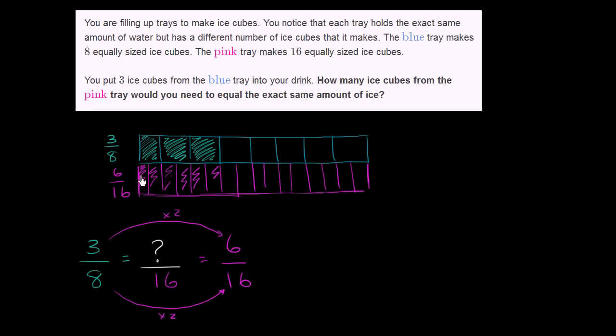Well, sure it does. Because for the pink ice tray, you have two ice cubes for every one that you have in the blue ice tray. So in the blue ice tray, you have eight equally sized cubes. Well, for each of those, you're going to have two in the pink ice tray. So you multiply by two to have 16 equally sized cubes. And out of the blue tray, if you take three, well, that equivalent amount for each of those cubes, you would get two from the pink ice tray. So you're multiplying by two right over there.